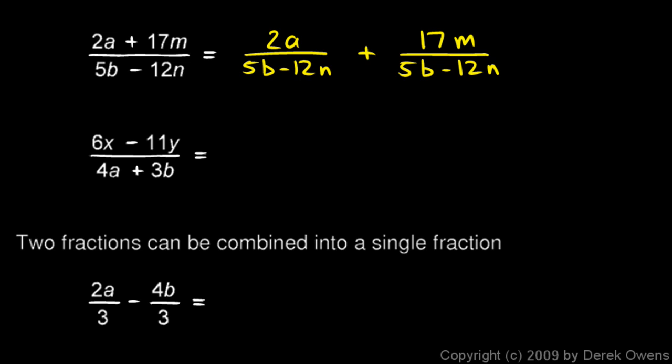One more example: 6x minus 11y over 4a plus 3b. And you should be catching on now. This could be rewritten as 6x over that whole denominator minus 11y over that whole denominator.